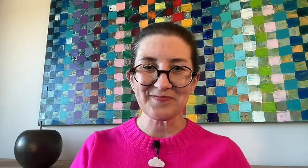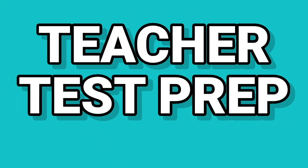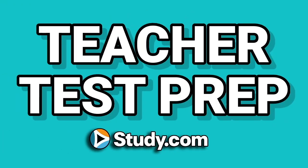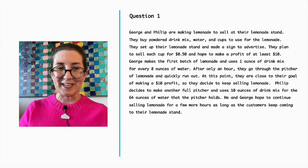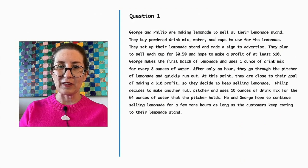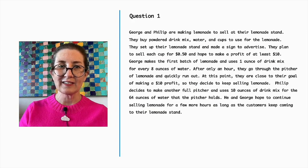Let's review the types of questions you can expect to encounter on the exam. Let's get started. Question number one. George and Philip are making lemonade to sell at their lemonade stand. They buy powdered drink mix, water, and cups to use for the lemonade. They set up their lemonade stand and made a sign to advertise.